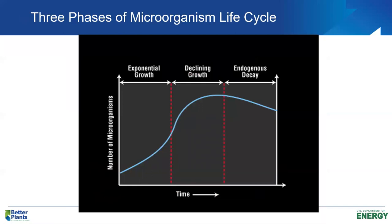Looking at the phases of growth in biological treatment: if we took a beaker of influent wastewater, added sludge, and measured microorganism concentration over time, we'd get a growth curve represented by the blue curve in the diagram. Initially, microorganisms acclimate to their environment, then we enter the exponential growth phase — plenty of food, bacteria reproducing rapidly. We typically don't operate activated sludge in the exponential growth phase because we get poor settling sludge and too much organic matter in the system and effluent.